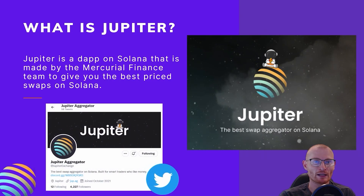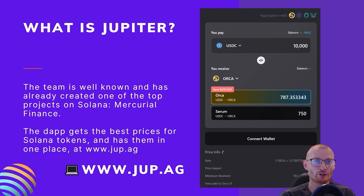Jupiter is a dApp on Solana made by the Mercurial Finance team to give you the best price swaps on Solana. The team is well known and has already created one of the top projects on Solana, which is Mercurial Finance. The dApp gets the best prices for Solana tokens and has them in one place at jup.ag.